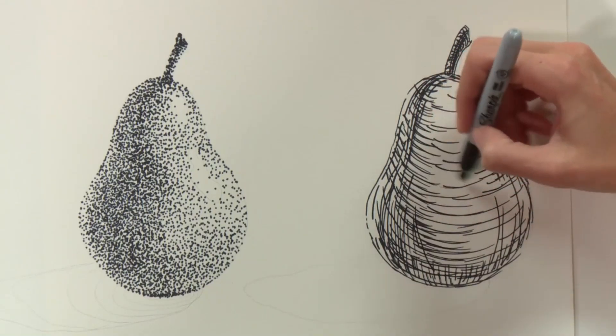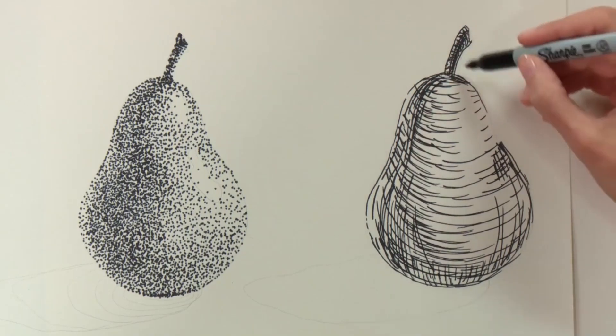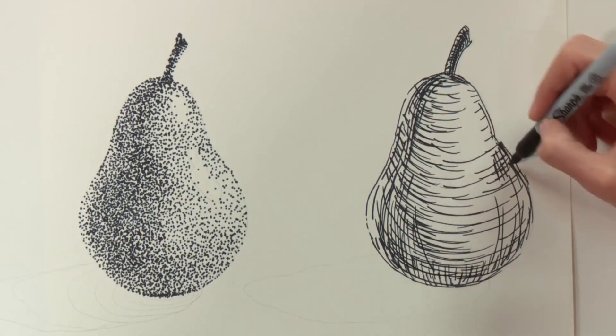And I'm leaving an area for a highlight, so I'm avoiding this upper left right hand side here just to make sure I can have enough space for a highlight there.